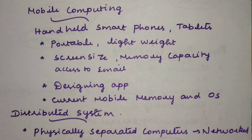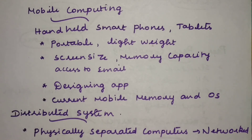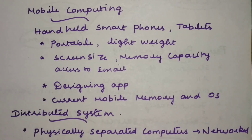Due to power consumption constraints, mobile devices use smaller, slower, and fewer processing cores. That is what the mobile computing environment involves and what we are actually doing with it. Thank you.